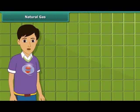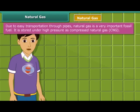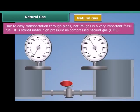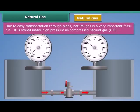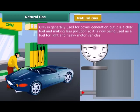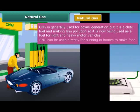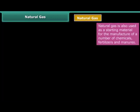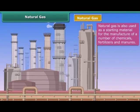Now let us move on to our next exhaustible natural resource: natural gas, also known as compressed natural gas or CNG. It is stored under high pressure as CNG. CNG is generally used for power generation, but due to being less polluting, it is also used as a fuel for vehicles and for cooking purposes. Natural gas is also used as a base material for the manufacture of a number of chemicals and fertilizers.